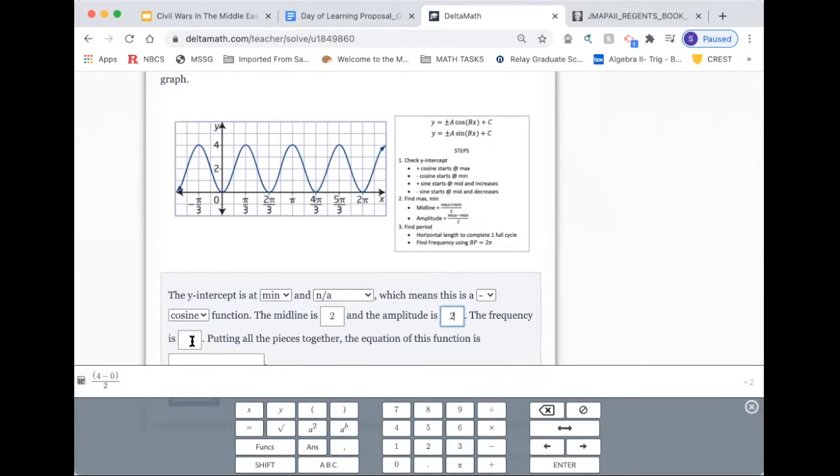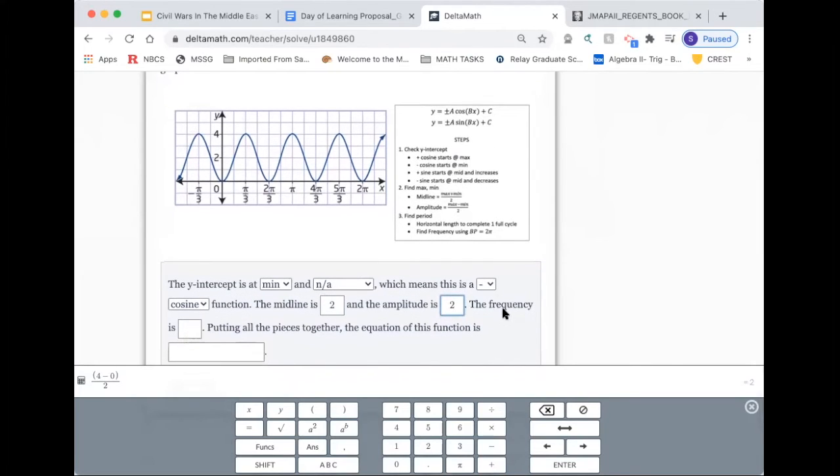So the frequency is, now this is the trickiest part. The frequency cannot be found looking at the graph, so we're going to use period. To find period, we start at y-intercept, trace the graph until I return back to the same position, same direction, which is right here. So let me go ahead and just annotate. This is my period.